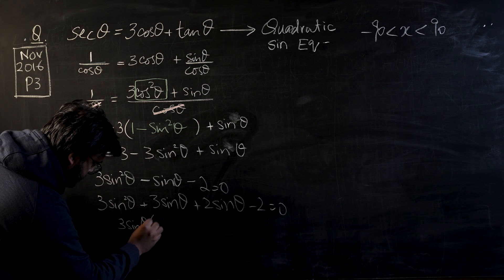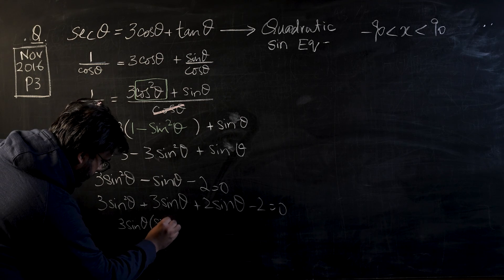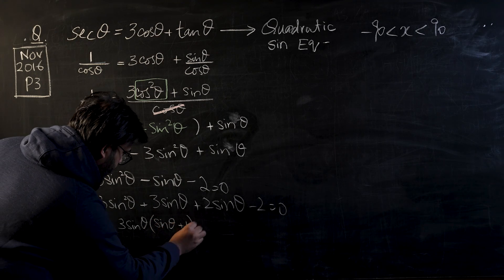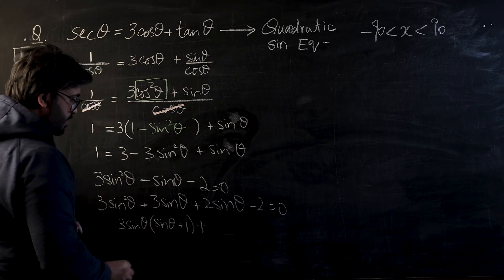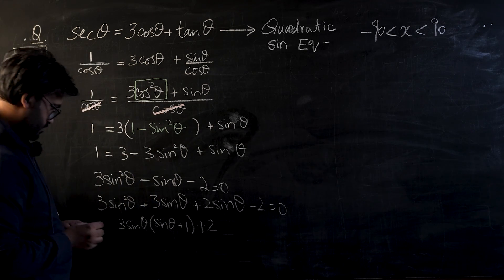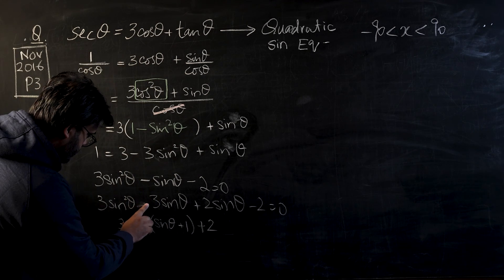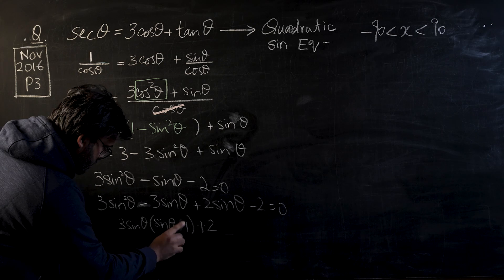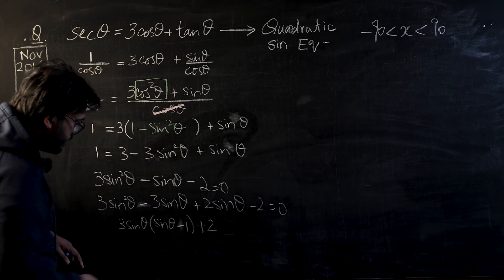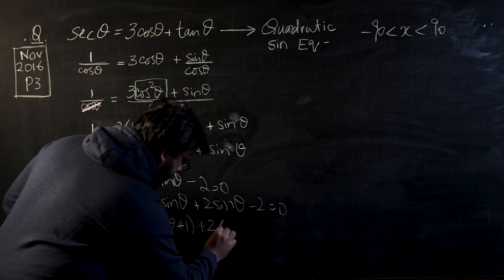And yes, we can factorize this. So this will become 3 sin θ will become common, so this is sin θ plus one, and plus two comes common. It would be minus one.